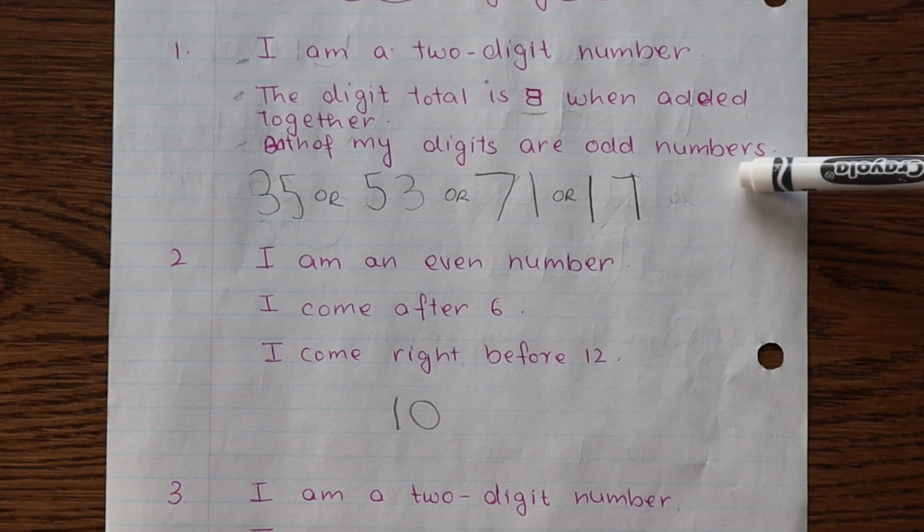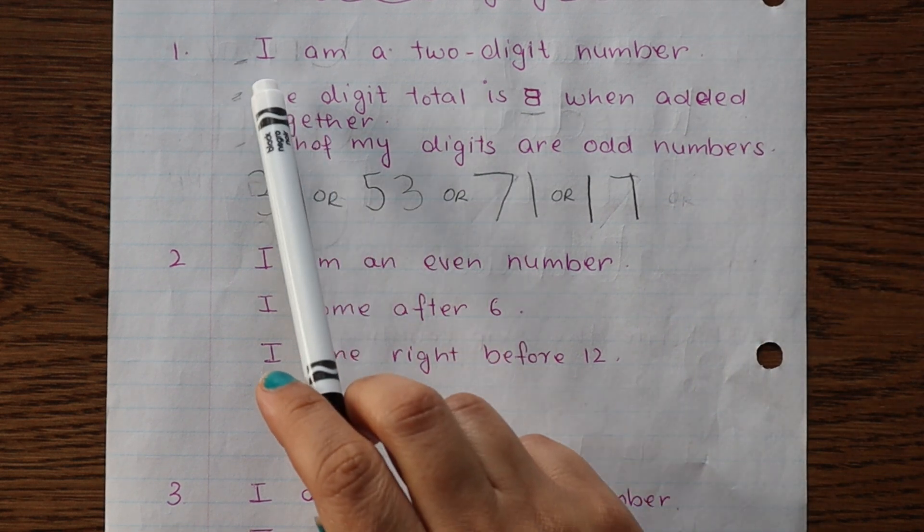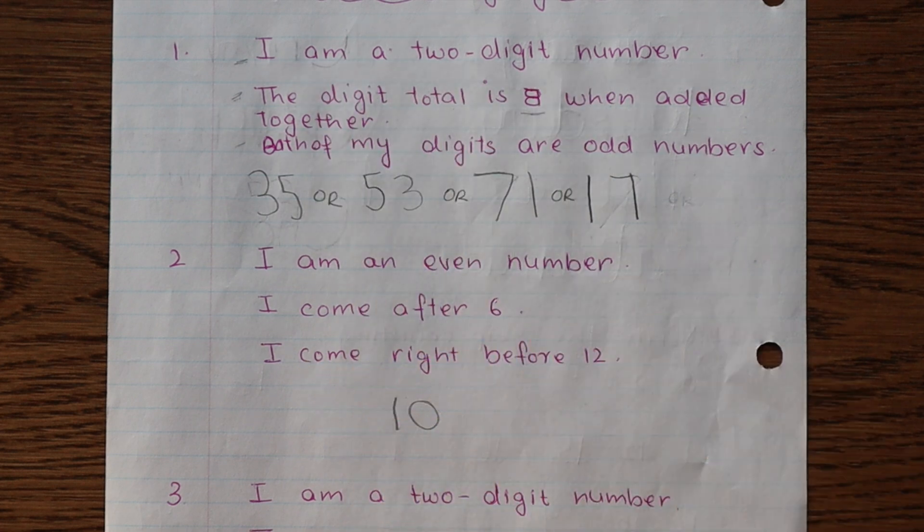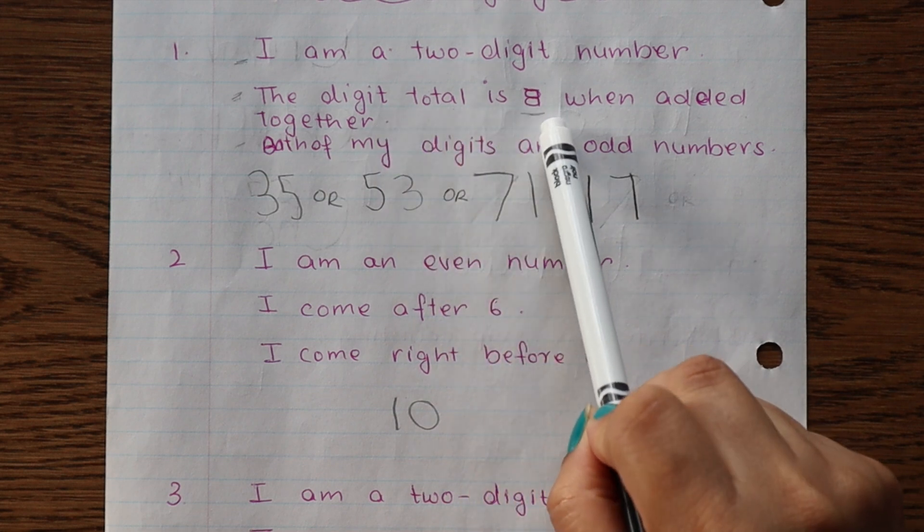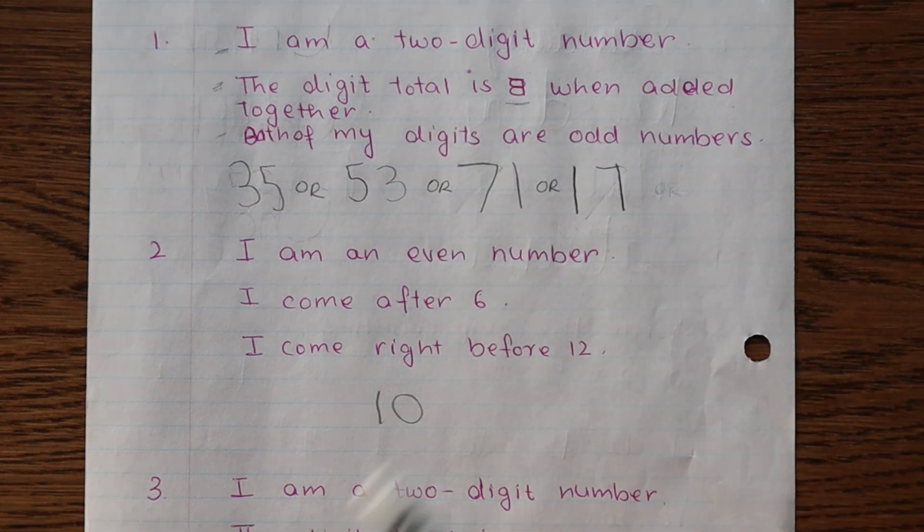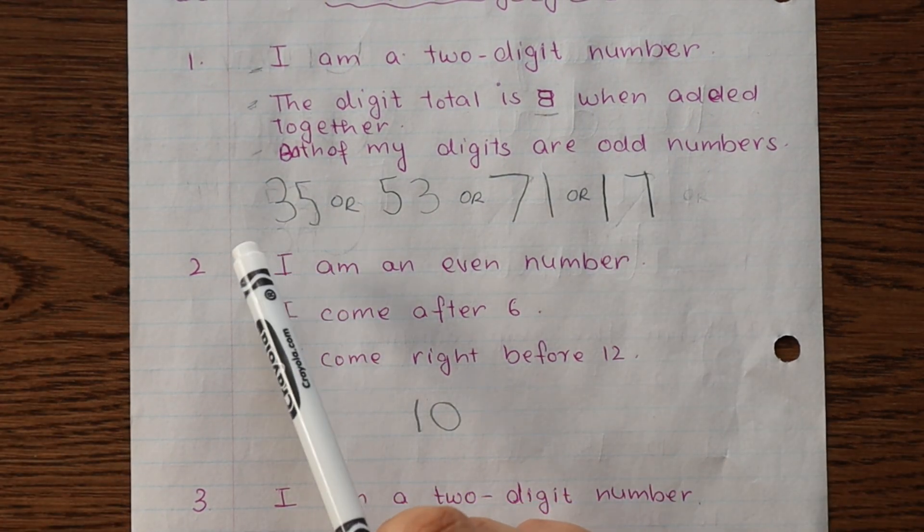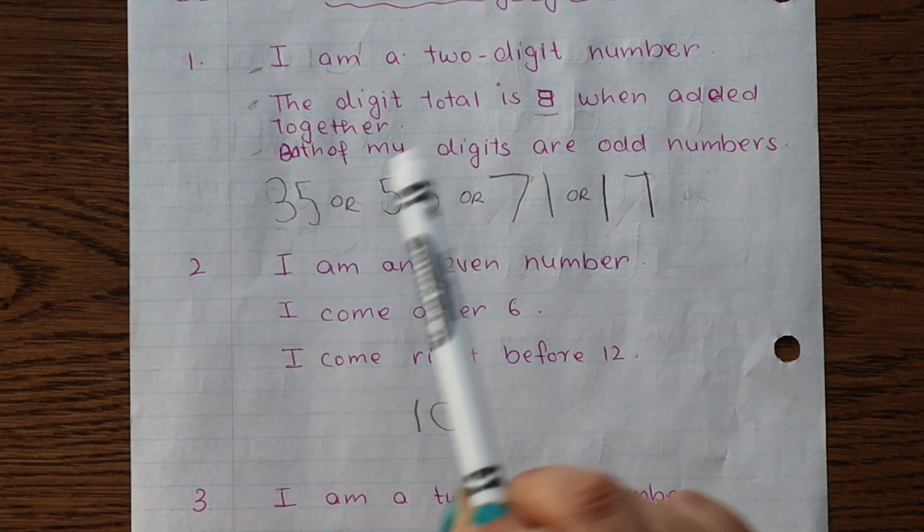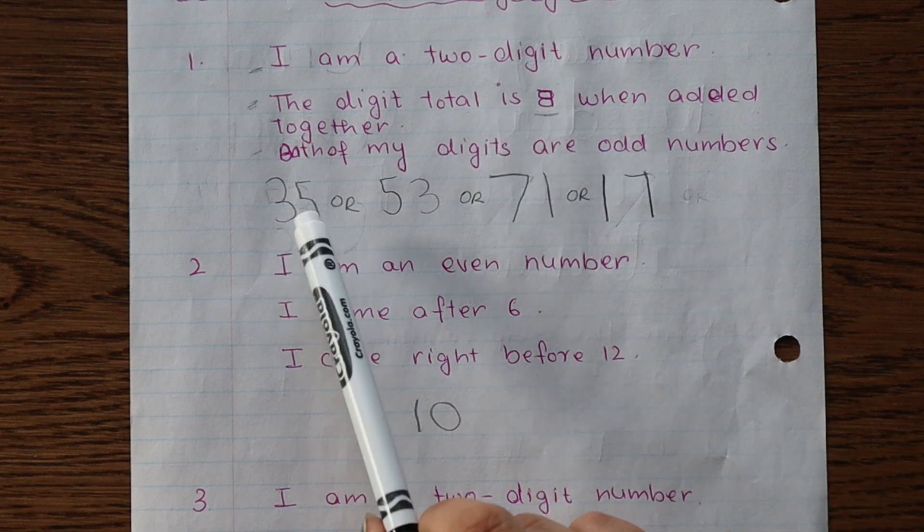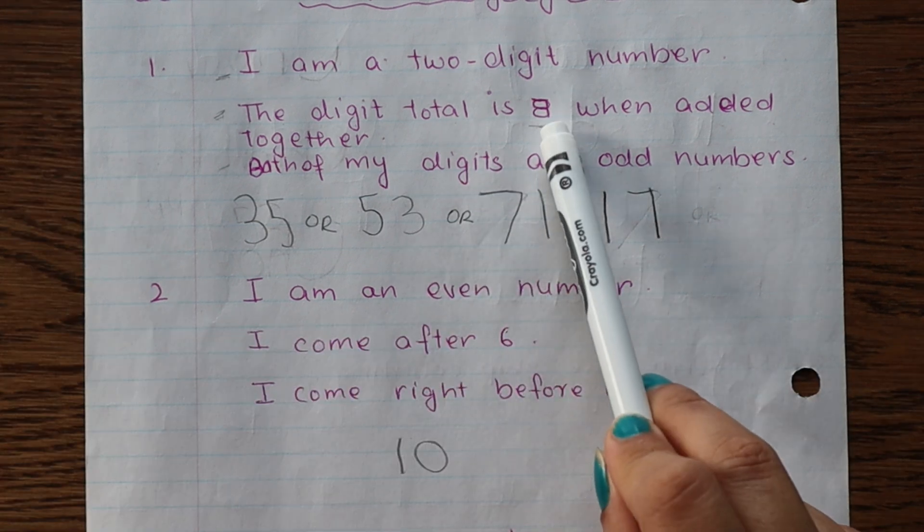So for this activity, child has to find the mystery number. I gave her a few clues and she has to figure out which number is that. For the first clue, I am a two-digit number. The digit total is eight when added together and both digits are odd numbers. So here we have four options. First is 35, so 35 is a two-digit number. When we add 3 and 5 it becomes 8, and 3 and 5 both are odd numbers. Here again, 71 is a two-digit number, 7 plus 1 is 8, and 7 and 1 both are odd numbers.